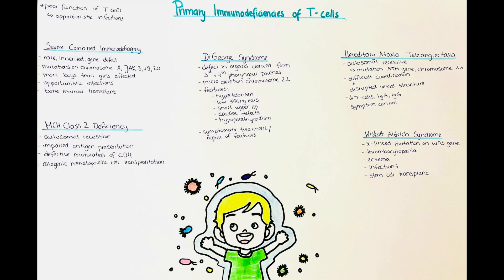Most patients have a microdeletion of chromosome 22, and detecting this deletion can help with diagnosis. Affected individuals also have characteristic features such as hypertelorism — widely separated eyes — low-set ears, and a shortened philtrum of the upper lip. Patients may also have cardiac defects. Their T-cells are often deficient, varying depending on the degree of thymus involvement. They often present with hypoparathyroidism and therefore low calcium levels, which can be severe and lead to jitteriness or even seizures.